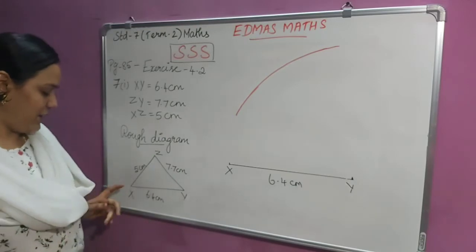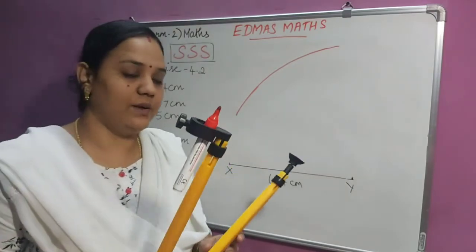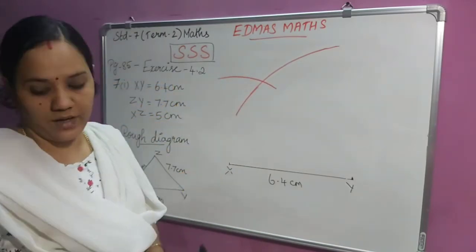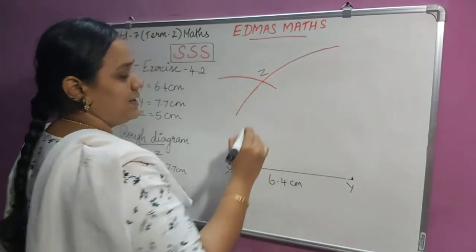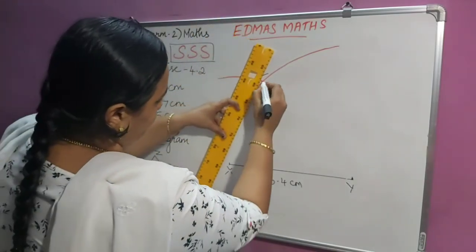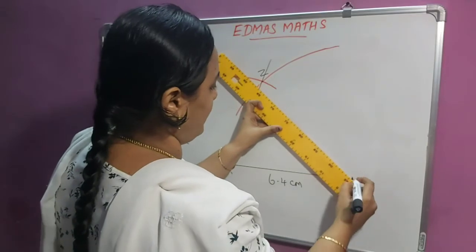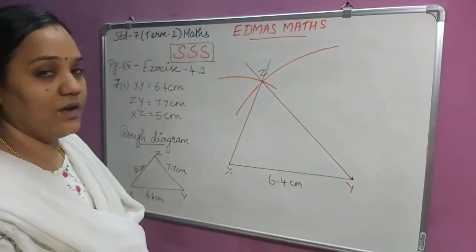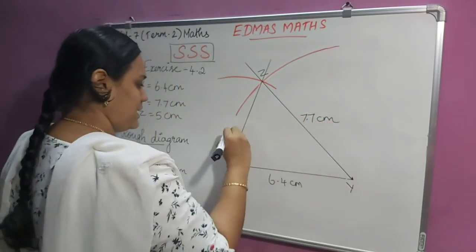Next I have to draw the other side. XZ is 5 centimeters. I have taken 5 centimeters in my compass, keeping my needle on X, and cutting an arc of 5 centimeters. Now this intersection point — we have to mark this point as Z. The final step is to join XZ and YZ. So this is your triangle. We have to mark the measurement 7.7 centimeters as well as 5 centimeters.